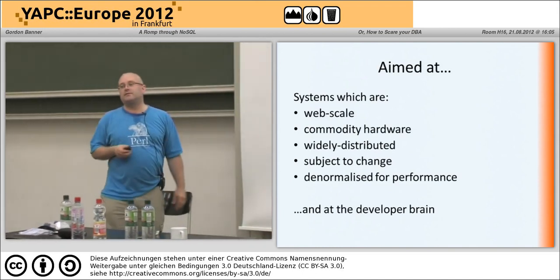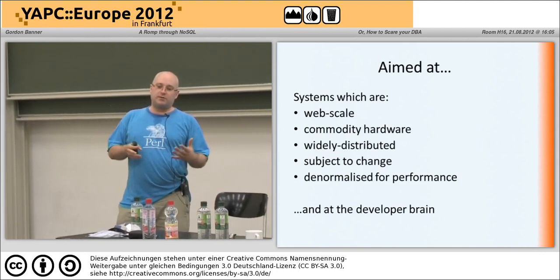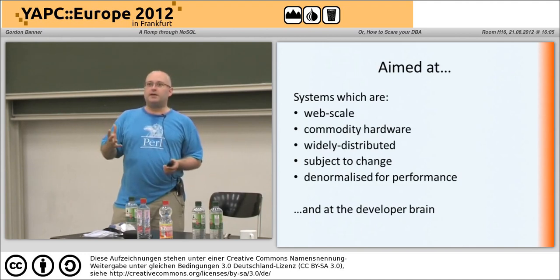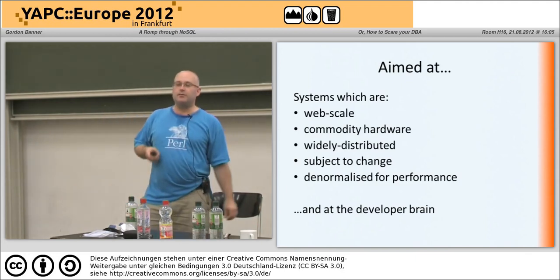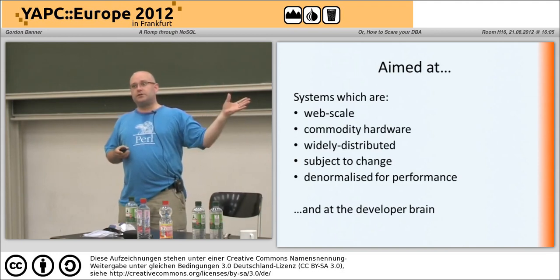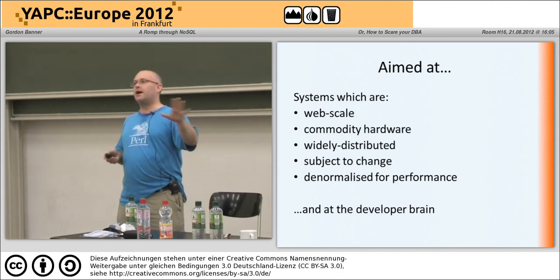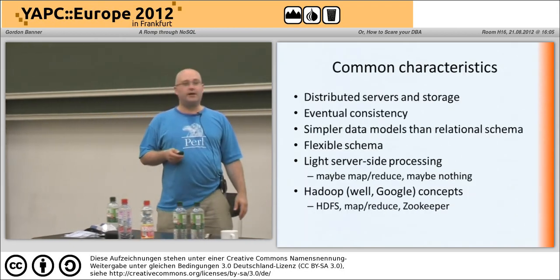The other thing this is aimed at is your brain and mine. The relational database model — tables, columns — is not that complicated, but it can get complicated, particularly when you're trying to shoehorn in concepts that don't really fit in a rectangular table. So a lot of the solutions are growing out of what developers really want. They want to be able to store an object, a hash, or whatever structure they've got. These are aimed to be much more brain-friendly.